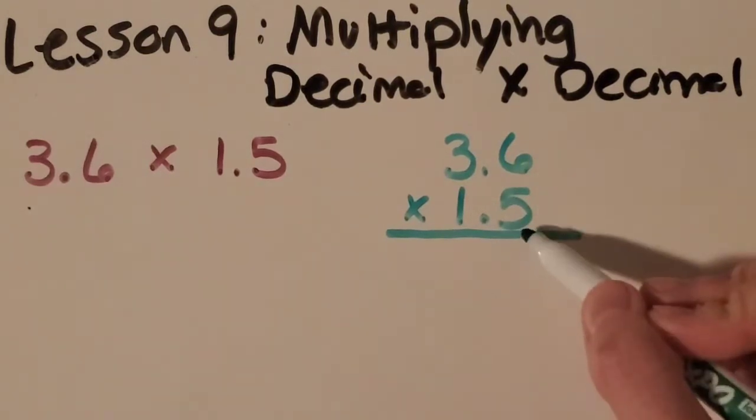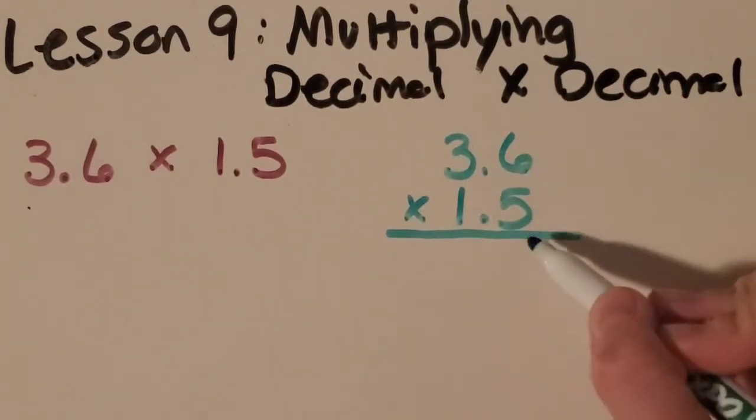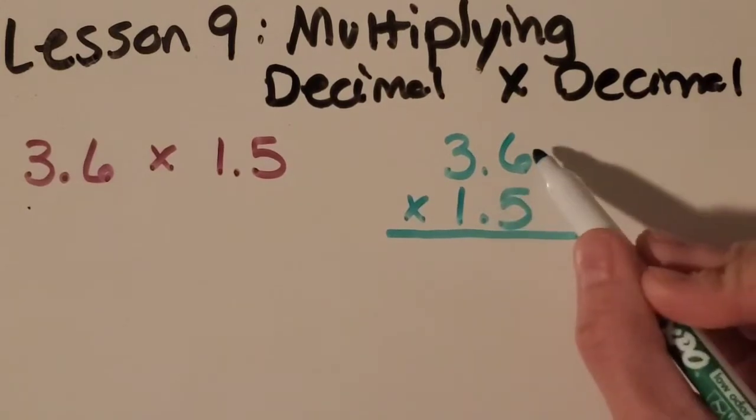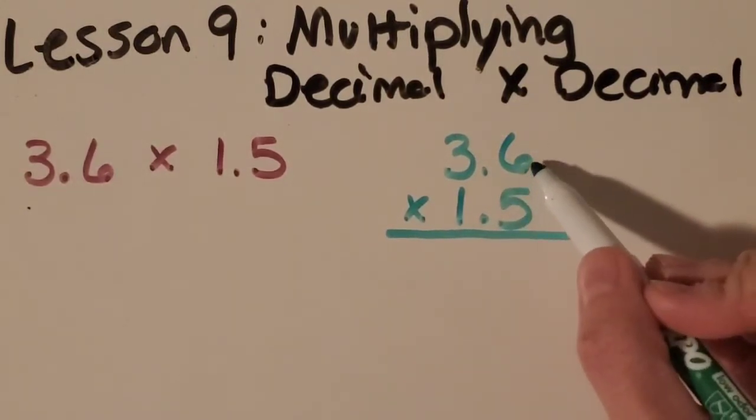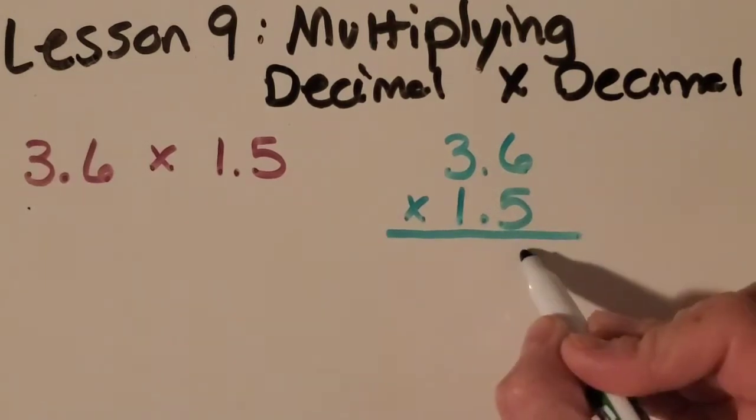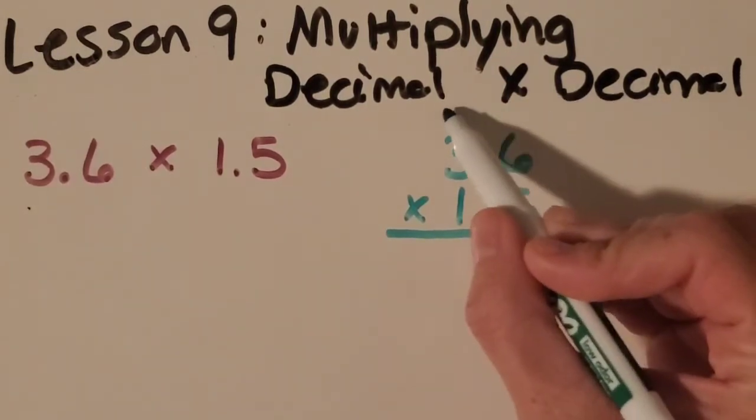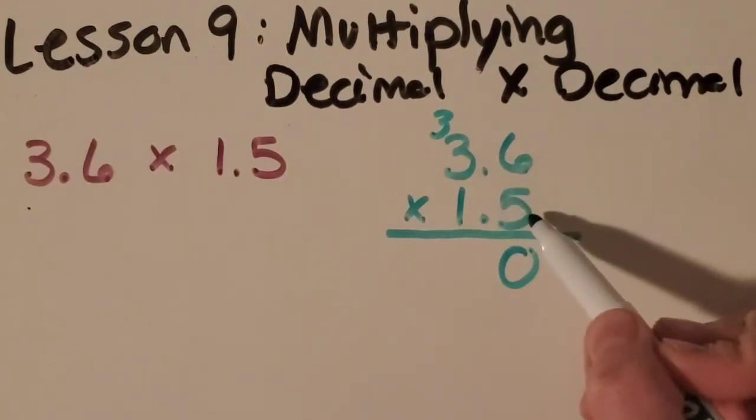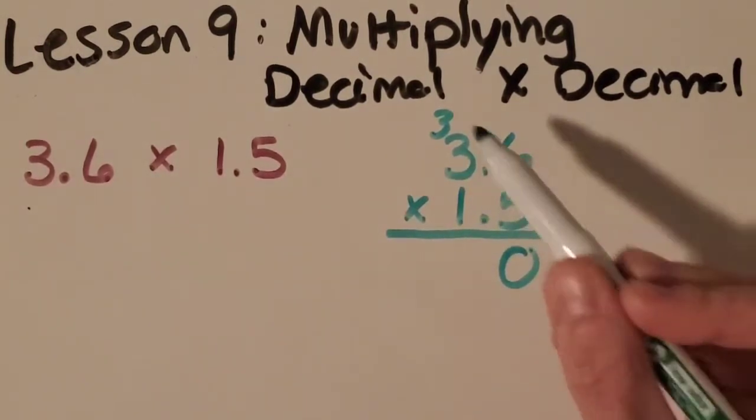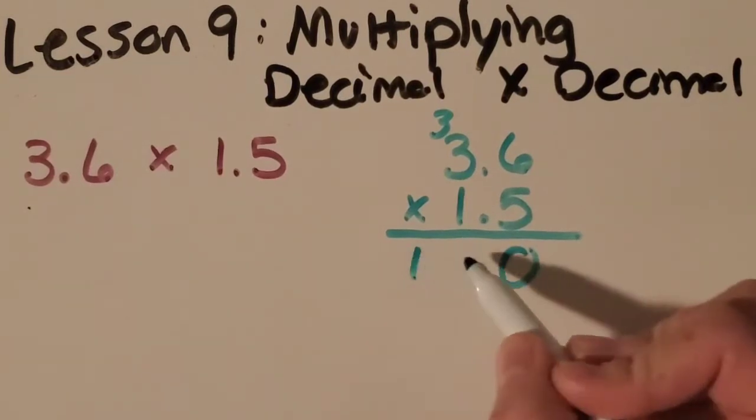So the first thing we want to do is multiply 3 and 6 by this 5 right here. So let's start with this first place. 6 times 5 is 30, so I regroup right there. Then I want to do 3 times 5 is 15 plus the 3 is 18.